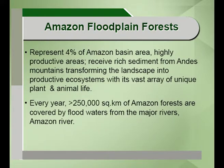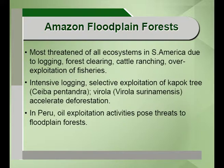The Amazon floodplain forest represents four percent of the Amazon basin area. These are highly productive areas that receive rich sediment from the Andes mountains and transform the landscape into very productive systems with a vast array of unique plant and animal life. Every year a large amount of these Amazon forests are covered by floodwaters from the Amazon river. These ecosystems are the most threatened in South America, mainly due to logging and forest clearing activities.